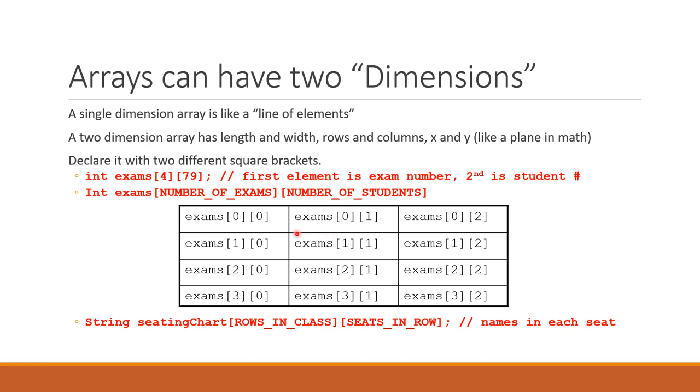If I come down here to this element I'm pointing out, you see it's exams[1][1], row one and column one. Way down here at the far lower right is exams[3][2], so that's row three, column two.